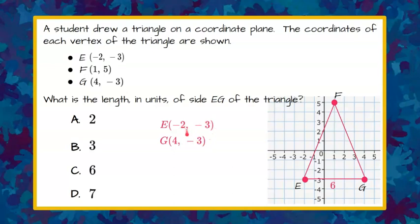But we can look at the X coordinate of E and the X coordinate of G. And we know that negative 2, if we think about it on a number line, negative 2 to positive 4. Notice negative 2 to positive 4. And we know that that's going to be 2 to 0 plus another 4, which equals 6.